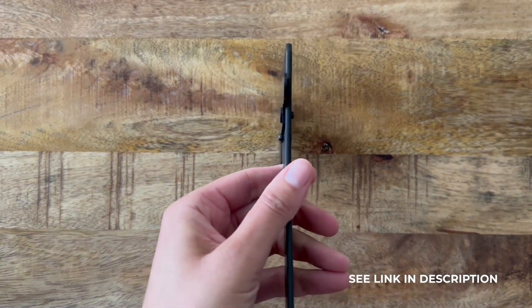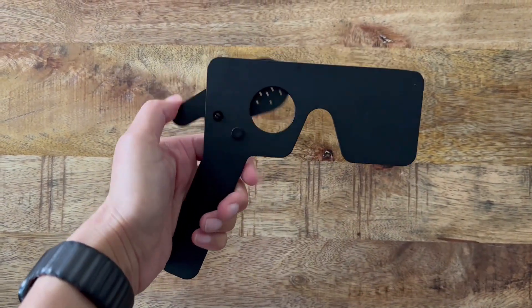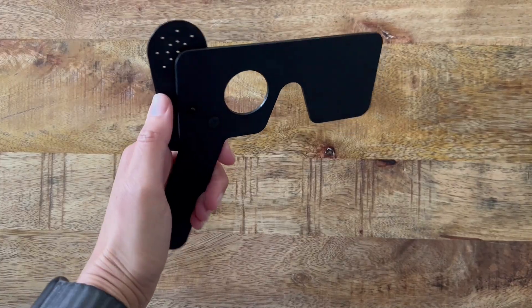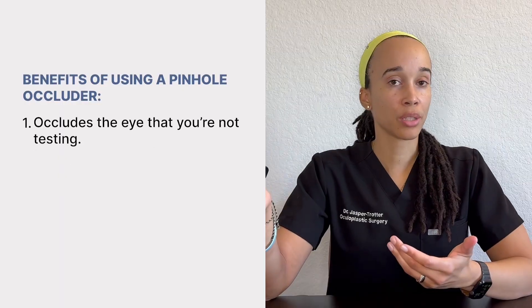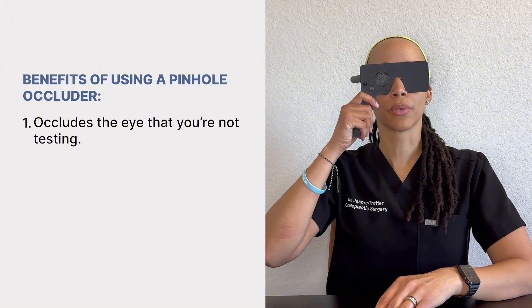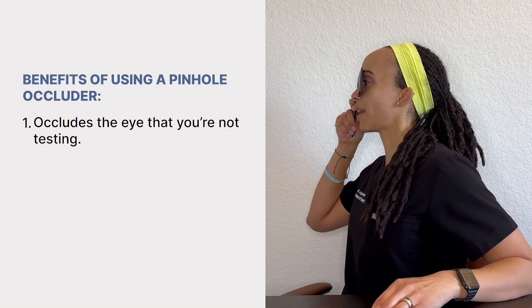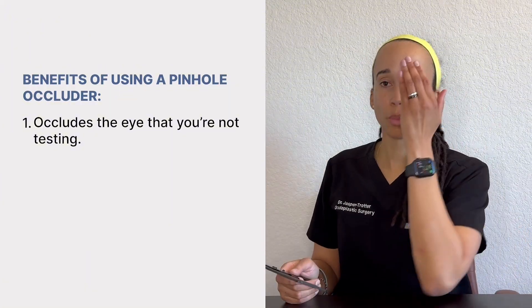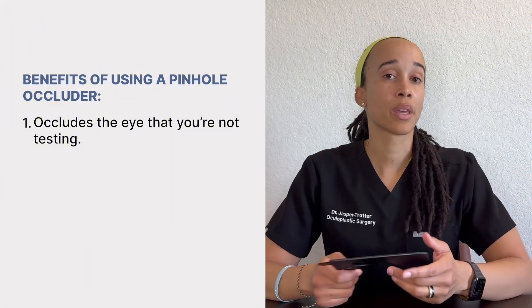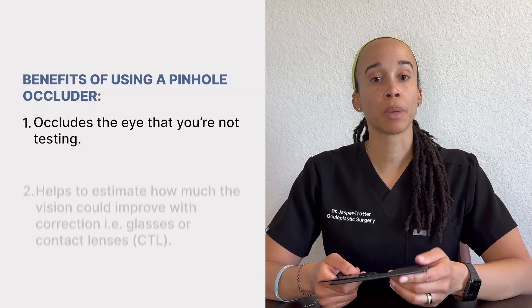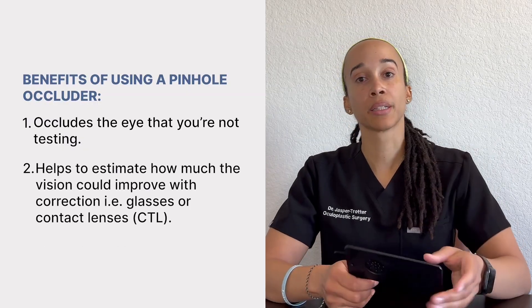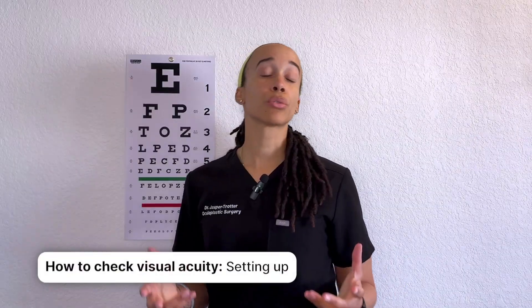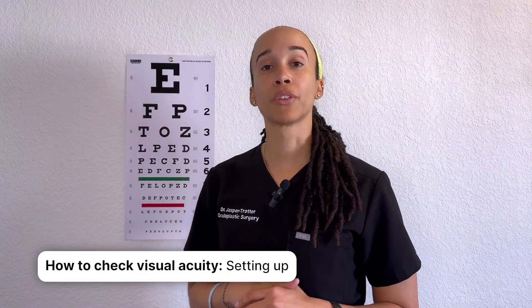Even if you see eye patients infrequently, it would be good to have at least one pinhole occluder available because they help with two main things. One, you want to check one eye at a time — if you're checking the right eye first, the occluder blocks the left eye so you don't have to worry about somebody cheating. The second way it's helpful is it helps to estimate how much the vision could improve with correction, such as glasses or contact lenses.